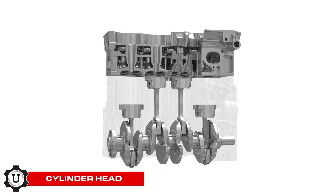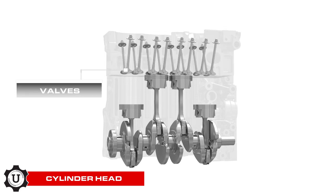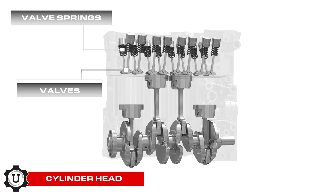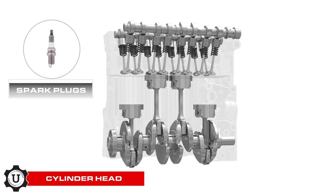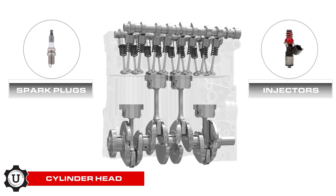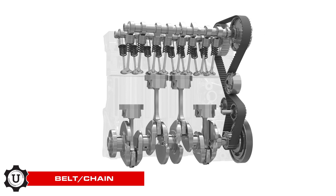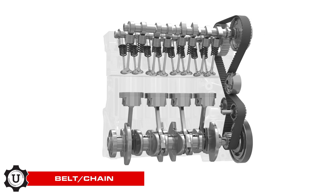After that comes our cylinder head, which is comprised of not only the head casting itself, but also includes our valves, valve springs, lifters, as well as camshafts. The cylinder head will also house our spark plugs, and in the case of direct-injected cars, our fuel injectors too. And last but certainly not least, a timing belt or chain connects our crankshaft and camshafts together so that they'll work in harmony.